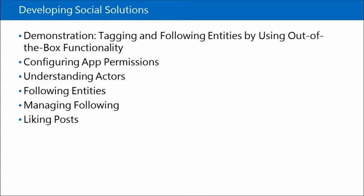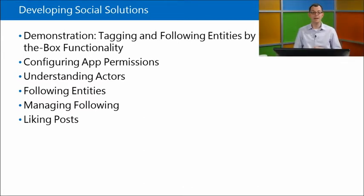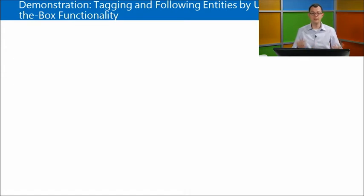Let's start talking about developing social solutions. We've talked about how people are at the heart of any social solution, and now we can go further into a subset of the API and look into purely social functions like following, mentioning, and tagging. Our first demo will be tagging and following entities using out-of-the-box functionality. We'll also talk about app permissions, actors — the types of things you can follow — and managing how you follow from code.